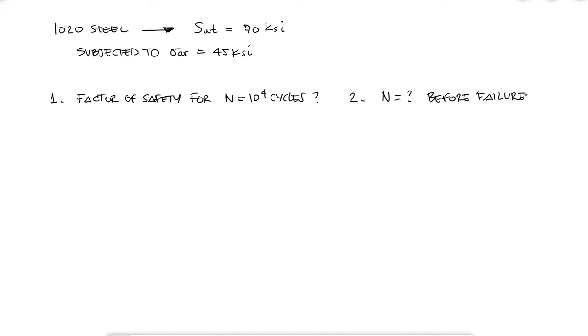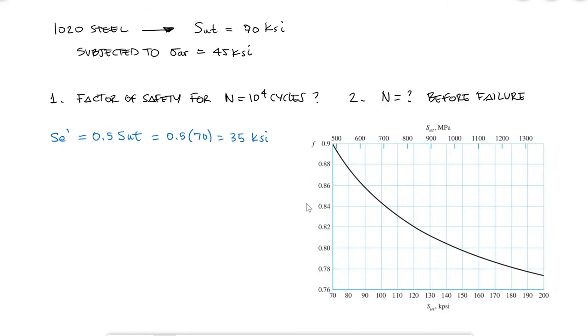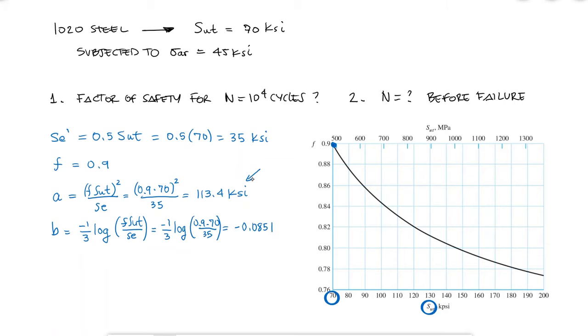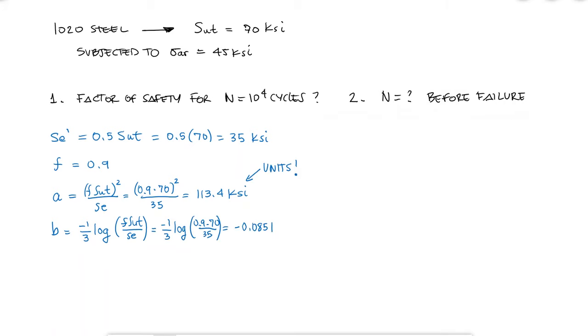The first thing I know is that the estimated endurance limit is 0.5 the ultimate strength since the ultimate strength is below 200 KSI. The F factor for a steel with an ultimate strength of 70 KSI would be 0.9. By using the expressions that we just derived, I find that the coefficient A is equal to 113.4 KSI and the B coefficient is equal to minus 0.0851. Therefore, for 10,000 cycles, the fatigue strength would be equal to 51.8.